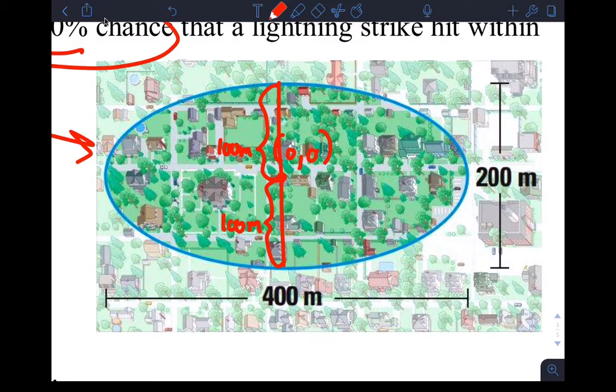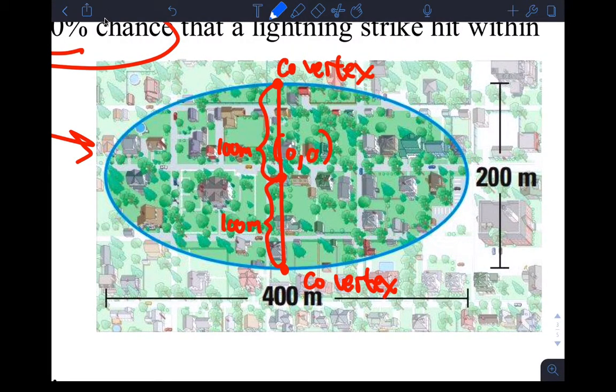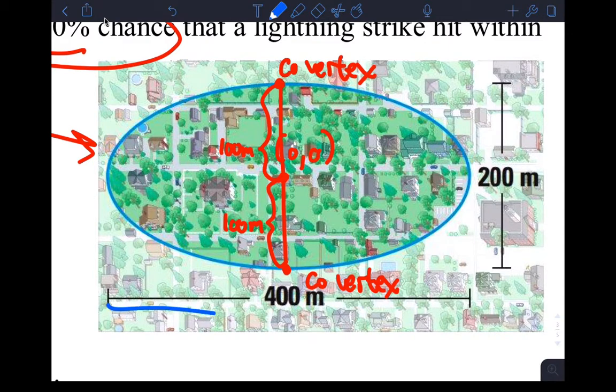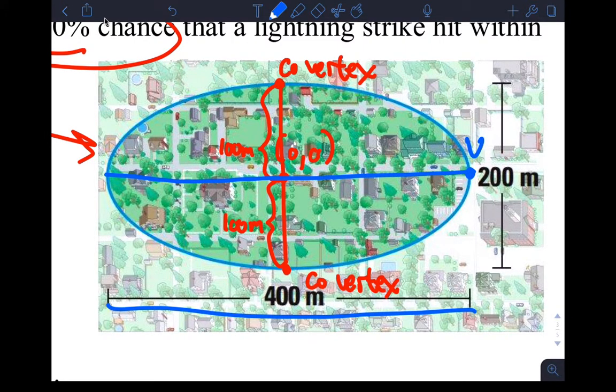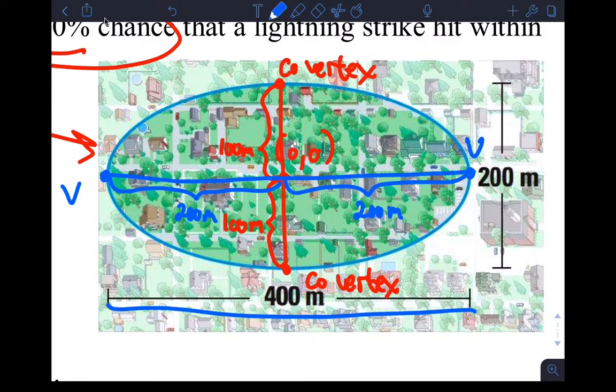But that gives us some good information because we know that this would be considered a co-vertex. And this would be considered a co-vertex. And if I, let's do this in a different color. Remember, if this distance here is 400 meters, then I know if I put the major axis here that this would be a vertex. This would be a vertex. And the distance from here to here would be half of that, which is 200 meters. And the distance from here to here would be 200 meters.